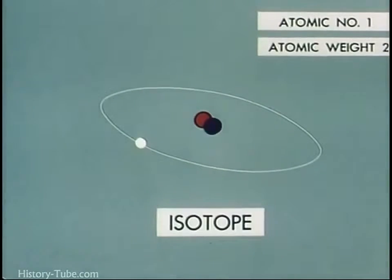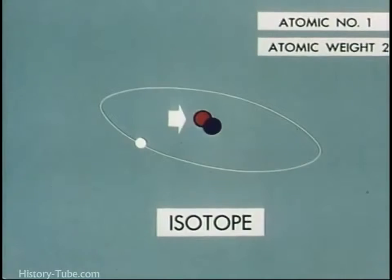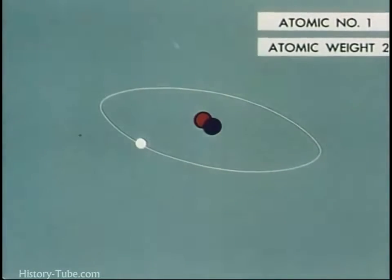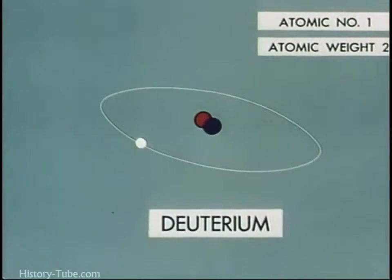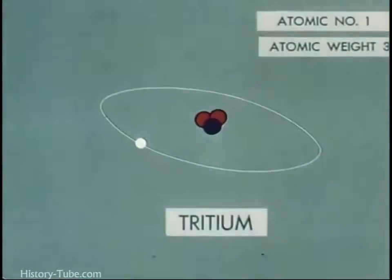For example, adding a neutron to a standard atom of hydrogen would produce the isotope of hydrogen known as deuterium. This is the hydrogen in heavy water. Adding another neutron produces a third hydrogen isotope called tritium.